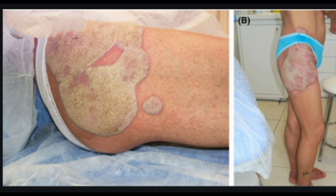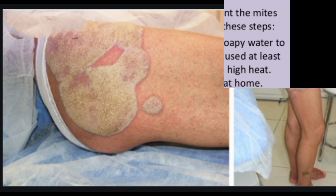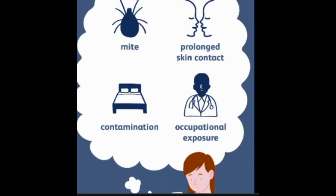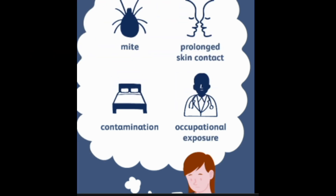The best way to prevent getting scabies is to avoid direct skin-to-skin contact with a person known to have it, and to avoid unwashed clothing or bedding used by an infested person. Since scabies mites can live three to four days after falling off your body, wash all clothing, bedding, towels, and pillows in hot water reaching 122°F (50°C), then dry on very high heat for at least 10 to 30 minutes. Anything that can't be washed should be thoroughly vacuumed; afterward, dispose of the vacuum bag and clean the vacuum with bleach and hot water.